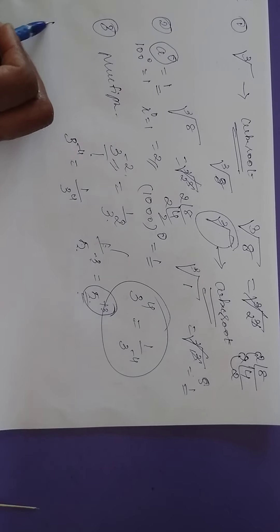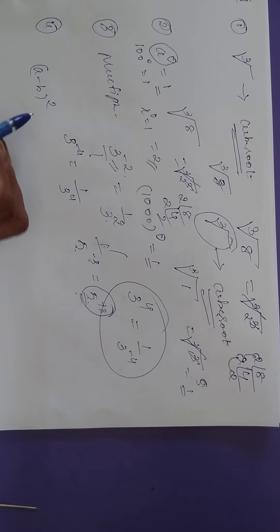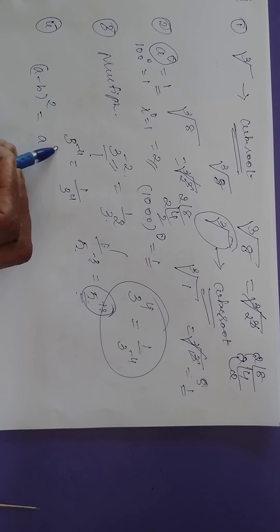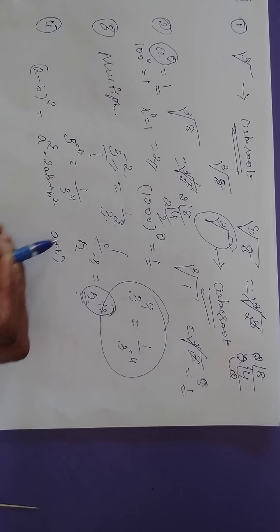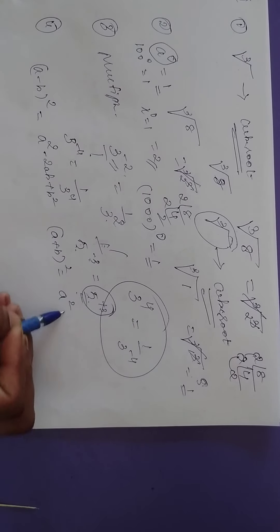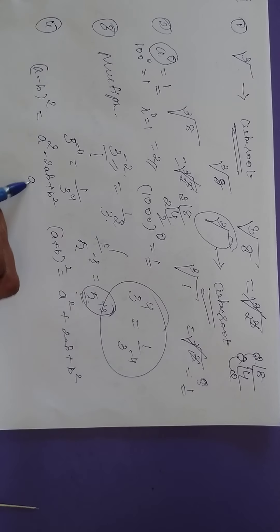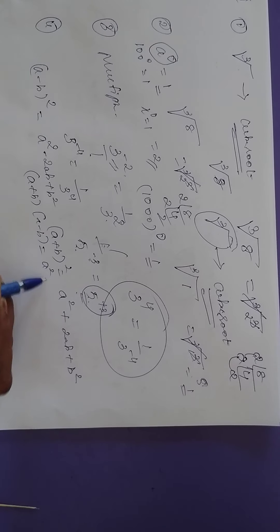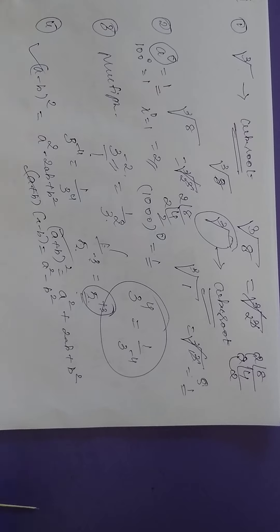What is expansion? Expand A minus B whole square — based on the formula, it is A squared minus 2AB plus B squared. What is A plus B whole square? A squared plus 2AB plus B squared. And A plus B into A minus B is nothing but A squared minus B squared. You have all the formulas — go through them once.